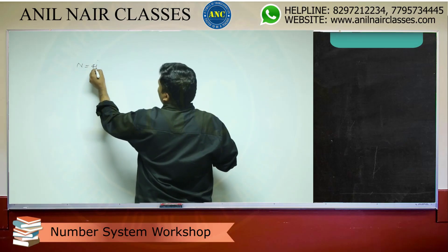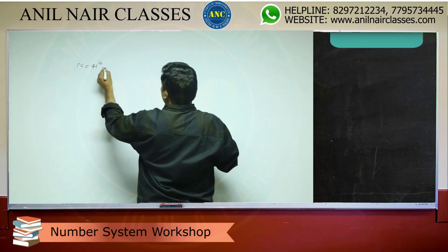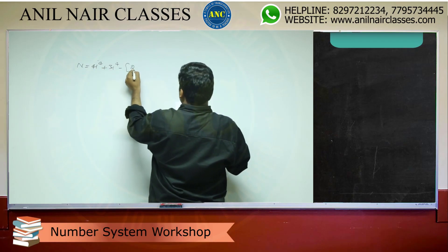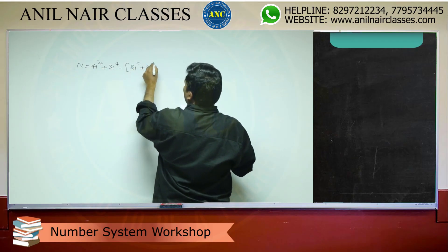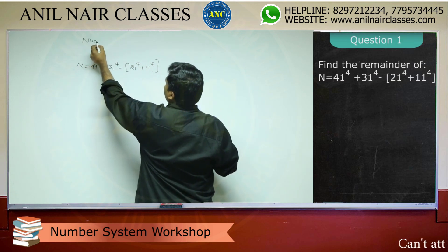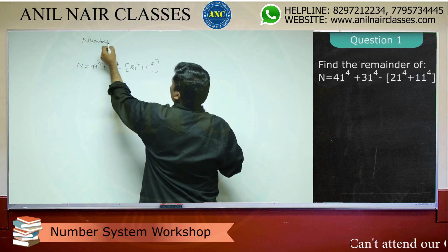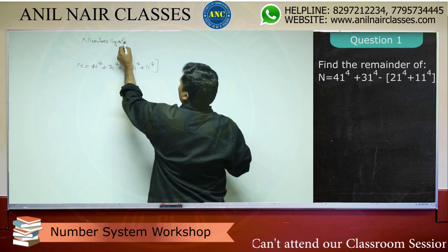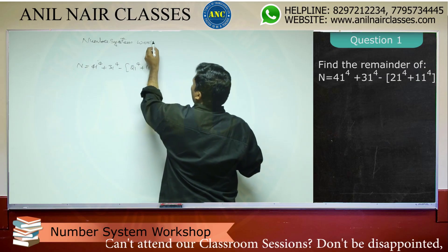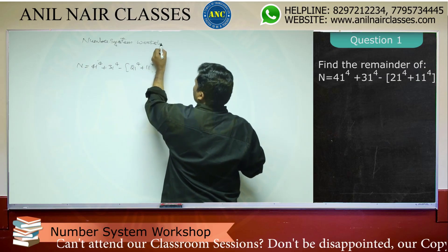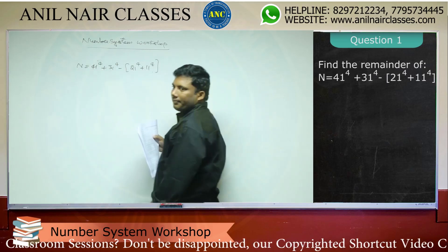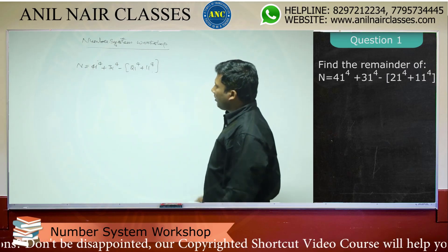N equals 41 to the power 4, plus 31 to the power 4, minus 21 to the power 4, plus 11 to the power 4. Most students will open this bracket and try to solve, but that will take a lot of time.